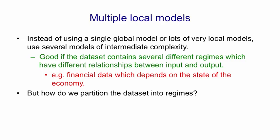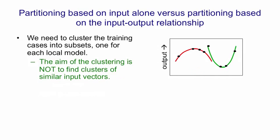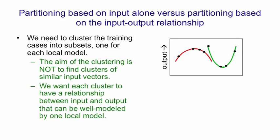So we have this problem if we're going to use different models for different regimes of how do we partition the data set into these different regimes. In order to fit different models to different regimes, we need to cluster the training data into subsets, one for each of these regimes. But we don't want to cluster the data based on the similarity of input vectors. What we're interested in is the similarity of input-output mappings.